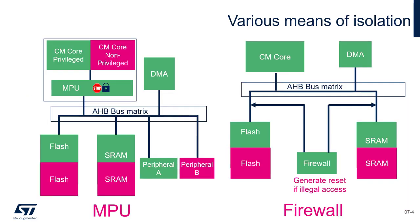One of the key requirements for isolating the secure and non-secure application is the ability to restrict access to memory regions and peripherals. There are various ways to do this on different STM32 families. One of the most common is MPU-based isolation, used together with privilege and non-privilege levels of execution on the Cortex core. The MPU is a core peripheral that allows defining regions inside the memory map and restricting access to those regions for the core running in non-privileged mode.